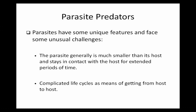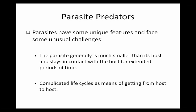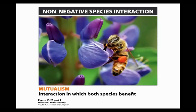Parasites have some unique features and face unusual challenges. The parasite is generally much smaller than its host and stays in contact with the host for an extended period of time, and it has a very complicated life cycle. For example, if your dog has had worms, the dog has to go outside, get near feces infected with worm eggs, ingest them, and then the worms reproduce inside the dog and are eventually passed through feces back to the outside. These are really complicated — and creepy — life cycles to think about.